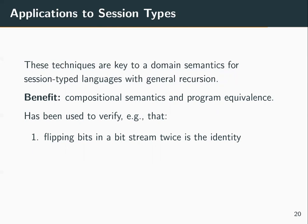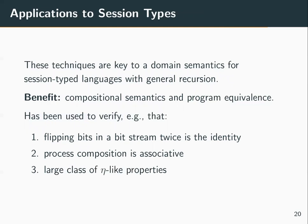For example, we verified that a process that flips bits in a stream twice is equivalent to the identity — an example requiring reasoning about both recursive types and a recursive process. We've also shown that process composition is associative, and demonstrated a large class of ETA-like properties for processes.